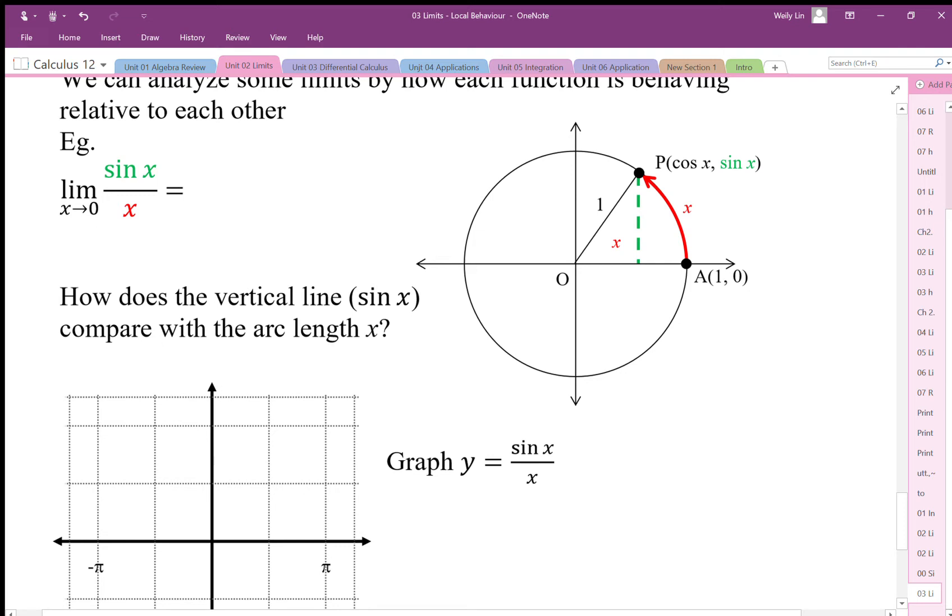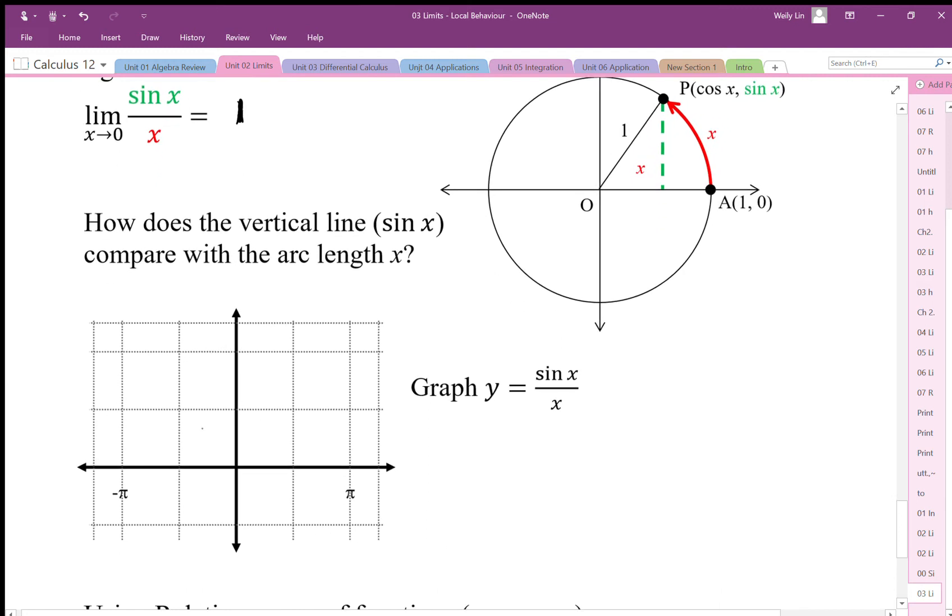The sine x over x ratio as x goes to zero tends to be that sine x length and the x length starts looking the same, so the ratio is equal to one. If we graph this, we also get the same thing. Sine of pi is zero, and negative pi is zero.